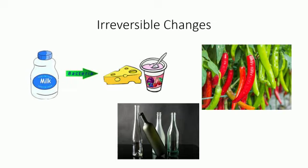Have you ever seen red tomatoes and chilies becoming green again? While making man-made substances, the properties of the substances undergo a change. This change occurs due to certain chemical reactions. These changes in properties are permanent — that is, the original substance cannot be obtained again from the new substance. Such changes are called irreversible changes.